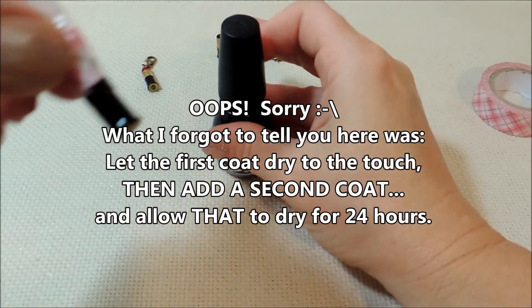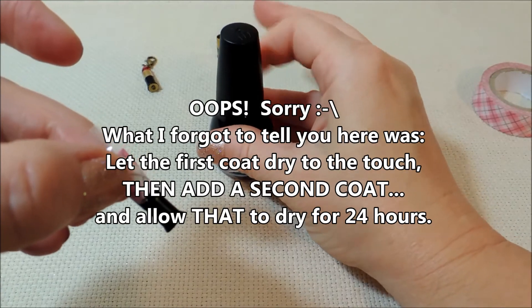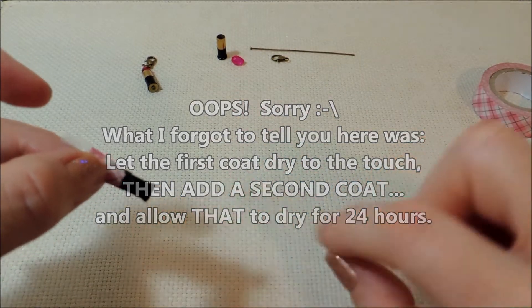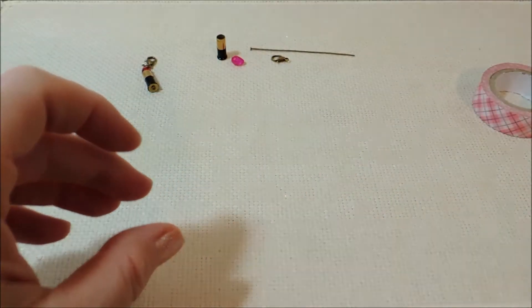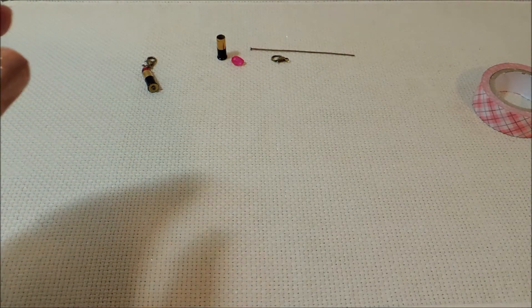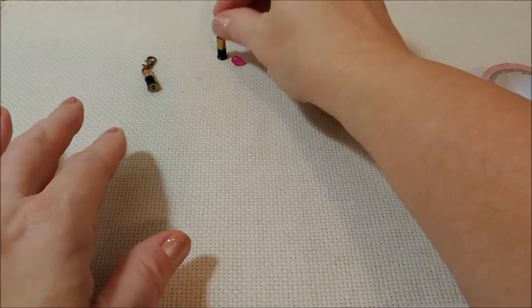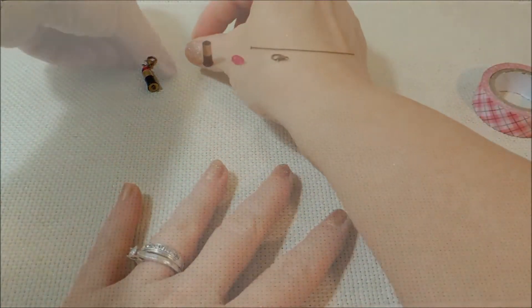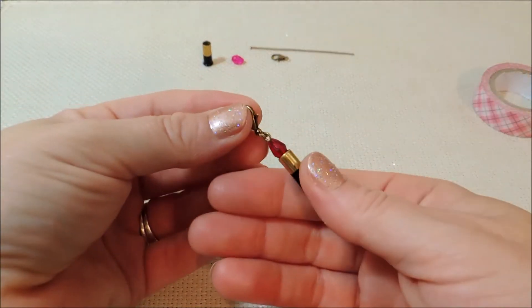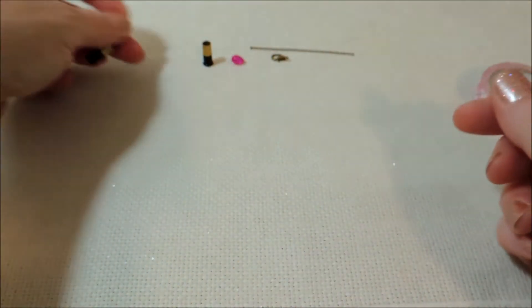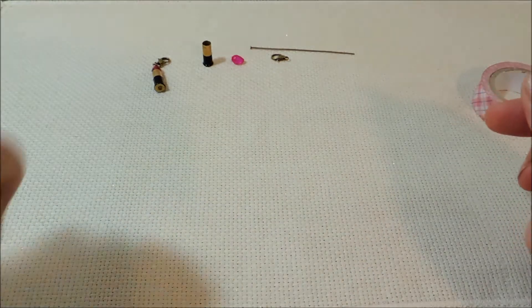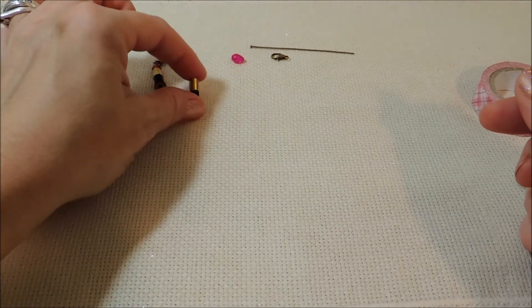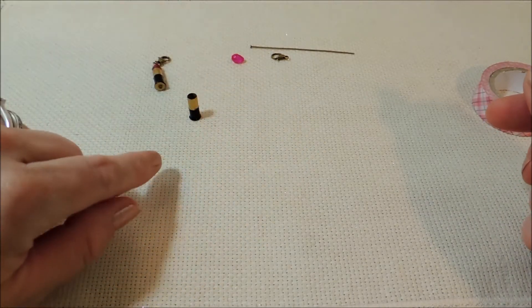And once it was dry to the touch, I let that dry for 24 hours. And then took my tape off of there. So I'm just going to set that one aside. And I've got one here that's been drying for 24 hours and we're going to use that one today. So I've got one here that is a red lipstick and today we're going to do a hot pink. So you're going to need your painted and dried .22 bullet casing with your hole drilled in it.